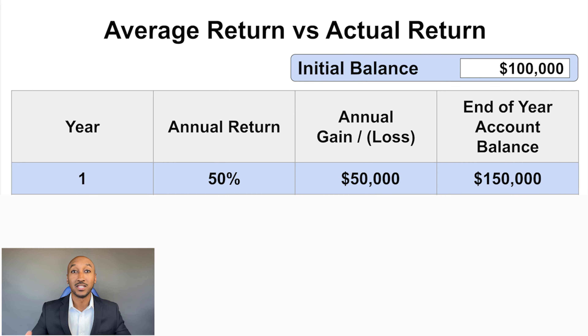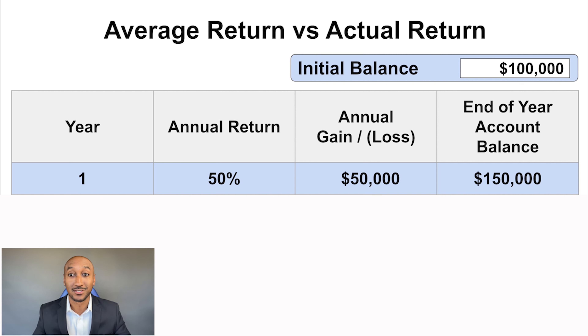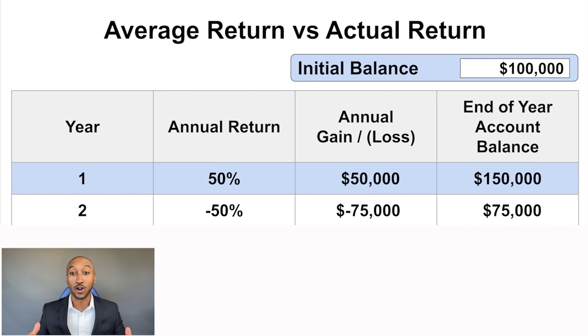Next, I want to teach you the difference between an average return and an actual return. This is important to understand because this is how a lot of people get misled and manipulated, and my goal is to educate you so you don't get taken advantage of — and so that if anyone ever presents this to you, you know exactly what questions to ask. In this chart, we're starting off with an example of $100,000. Let's say in year one the account grew 50%, meaning we made $50,000 that year, bringing our balance to $150,000.